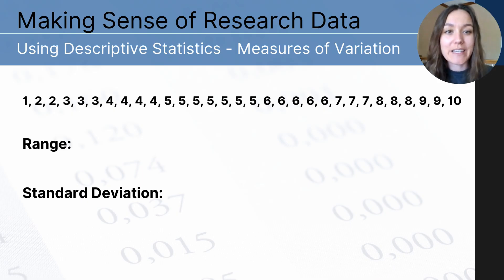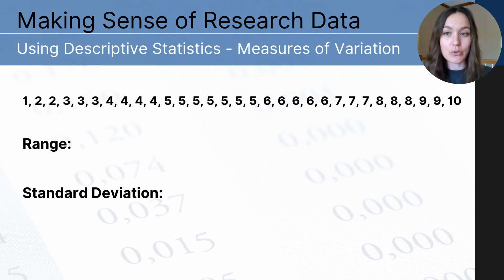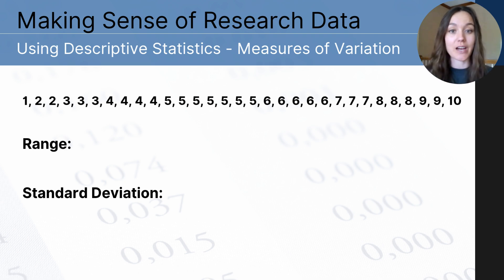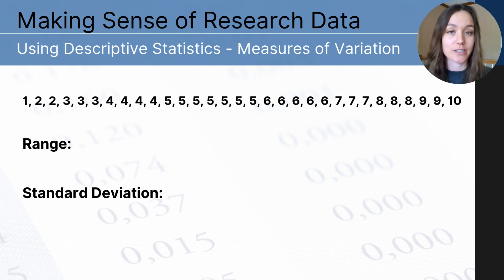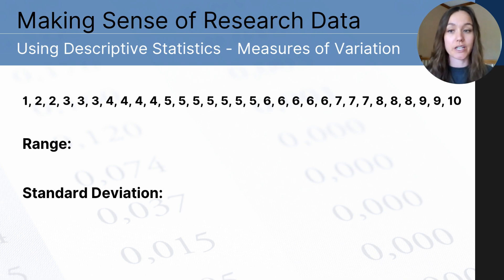Let's continue on with making sense of research data using descriptive statistics. Now we will focus on measures of variation. You can see that there are two measurement tools on this particular set of data: range and standard deviation. Both of these are considered measures of variation, and they help us understand how spread apart or dispersed our data set is.